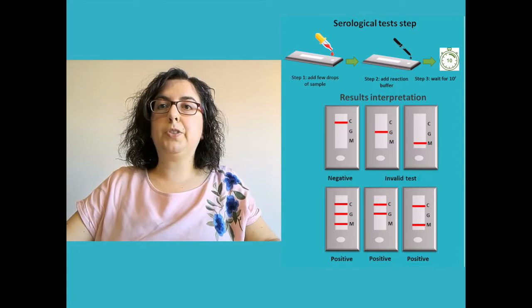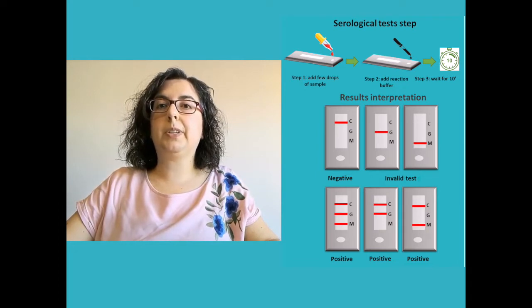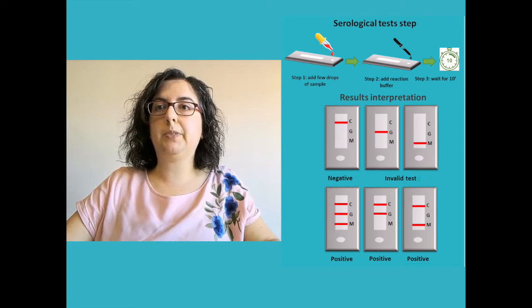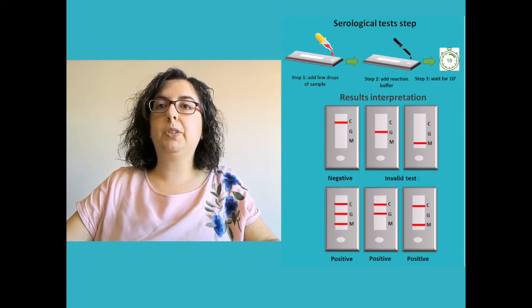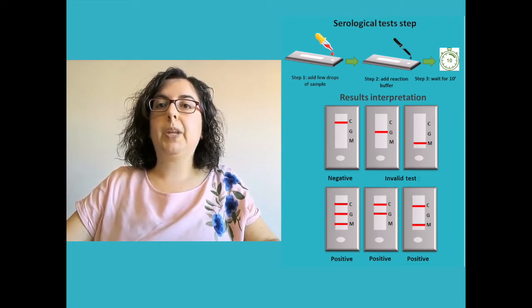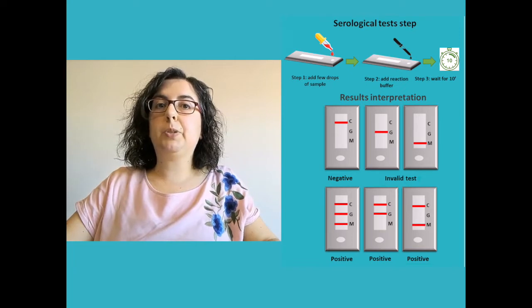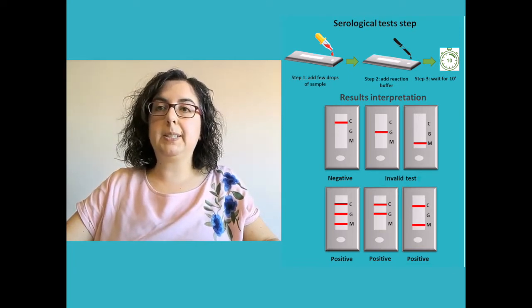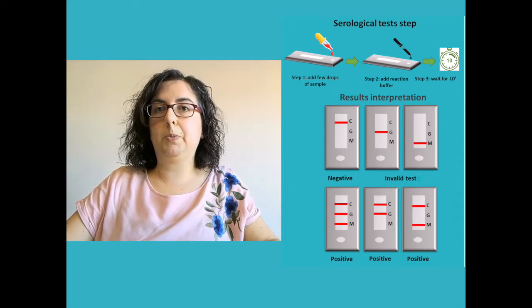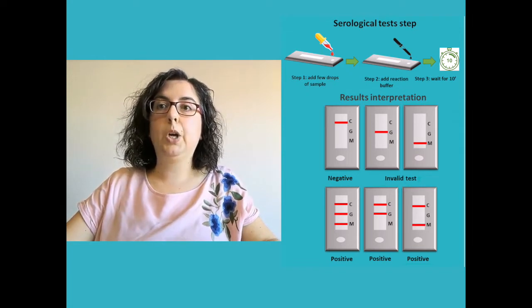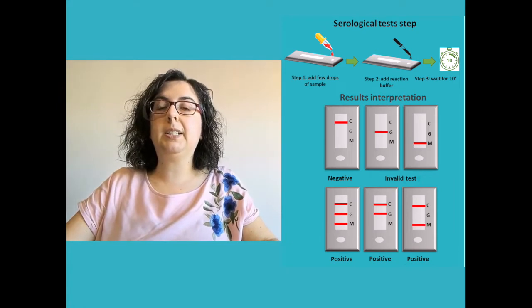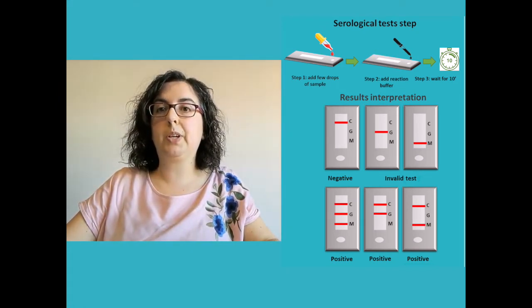The serological tests reveal the presence of a specific antibody and if we were exposed to the virus in the last few weeks by indirect methods. The serological tests measure the presence of antibodies against SARS-CoV-2 in the blood serum. In commercial serological tests, the blood serum is in contact with an antigen that is mainly the S1 subunit of the spike protein of the coronavirus.